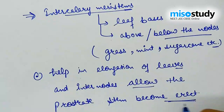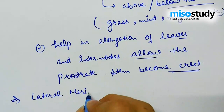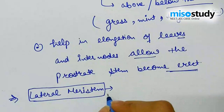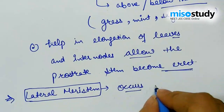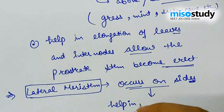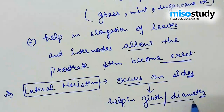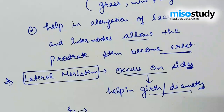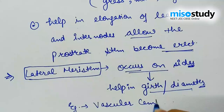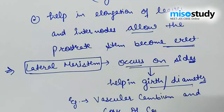The last option given is lateral meristems. Lateral meristems are generally present on the sides and help in increasing girth or diameter. An example is vascular cambium and cork cambium.